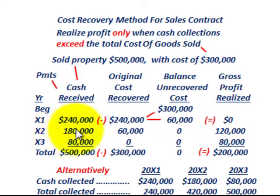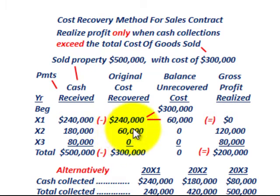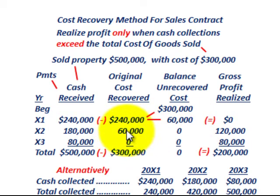Now let's look at year 20x2. We received a cash payment of $180,000, and we only have $60,000 remaining in our unrecovered cost balance. So here we recover the full $60,000 that was in our beginning balance, because we received cash payments of $180,000. Comparing the recovered cost of $60,000 to our cash receipts of $180,000, we realize gross profit of $120,000 in year 20x2.